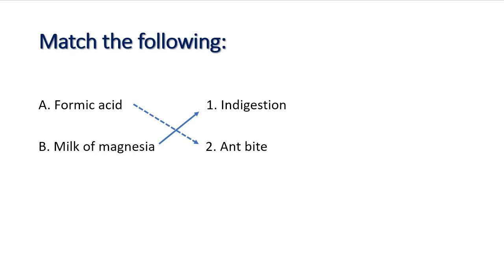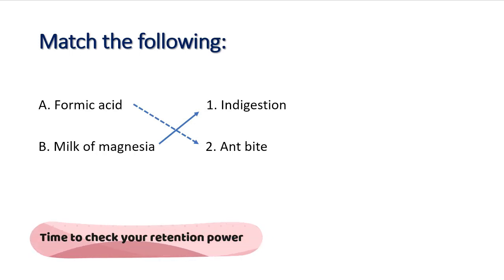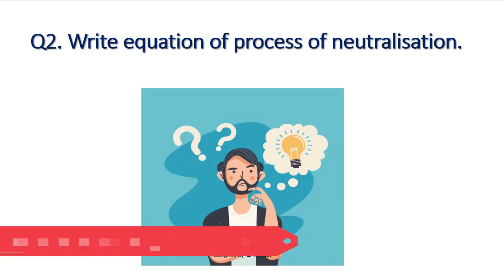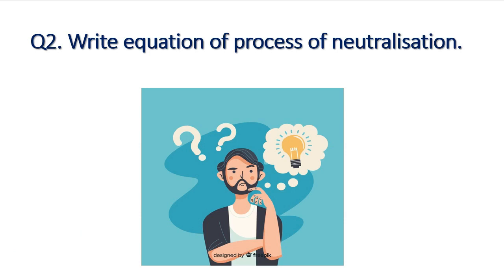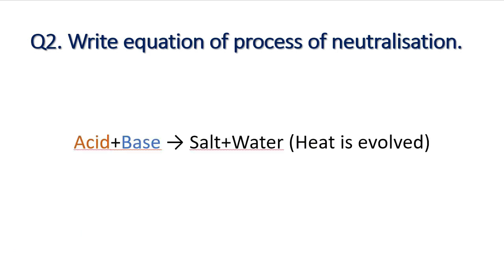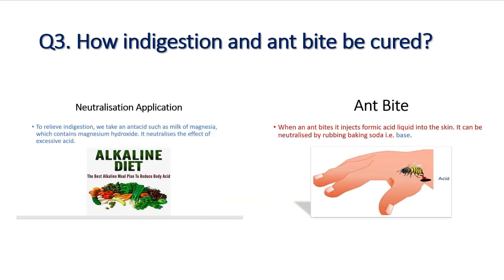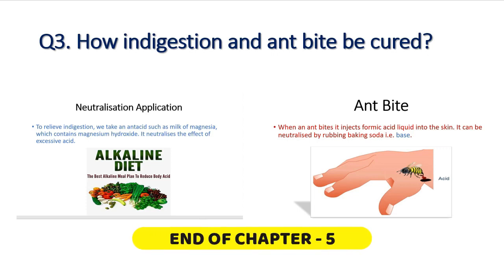In today's video we discussed what neutralization is and its applications. Let us sum up. Neutralization is a reaction between an acid and a base; during this process salt and water are produced with the evolution of heat. The equation is: acid plus base gives salt plus water and heat is evolved. Indigestion can be cured by taking antacids such as milk of magnesia and by including an alkaline-rich diet. An ant bite can be cured by rubbing baking soda on the affected part.